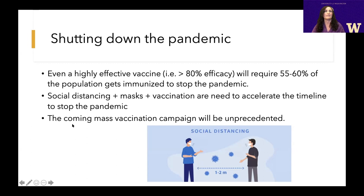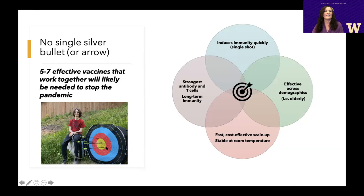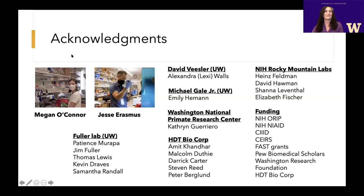I want to close with a picture of my son, who is an archer and won a national championship — as you can see with his arrows, you never get just one arrow exactly in the middle. This is to emphasize that there's not going to be one vaccine that shuts down the pandemic. We're going to need five to seven effective vaccines that will likely work together to stop the pandemic, because each vaccine has potential gaps and the others will fill in. Acknowledgments to postdocs Megan O'Connor and Jesse Erasmus, who are at the forefront of developing the RNA and DNA vaccines for COVID-19 in our lab, and many other collaborators.